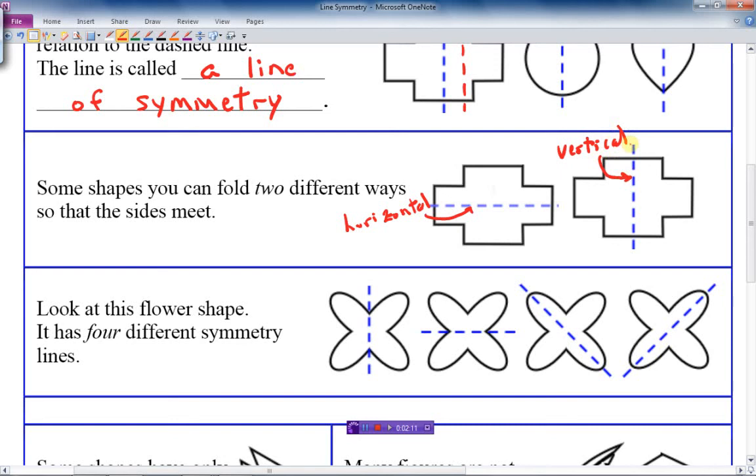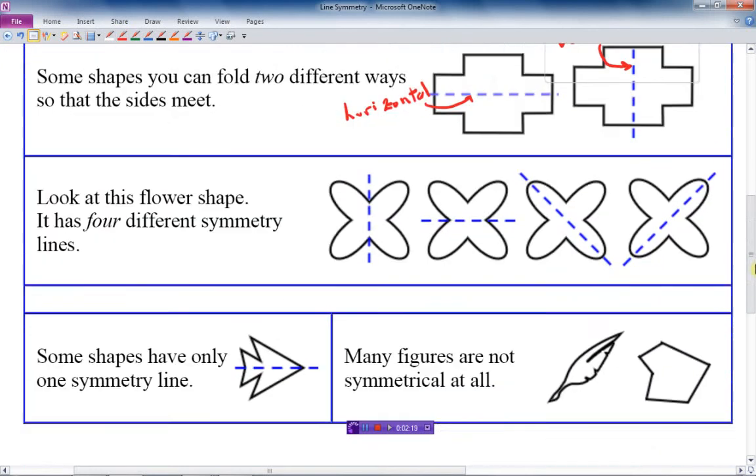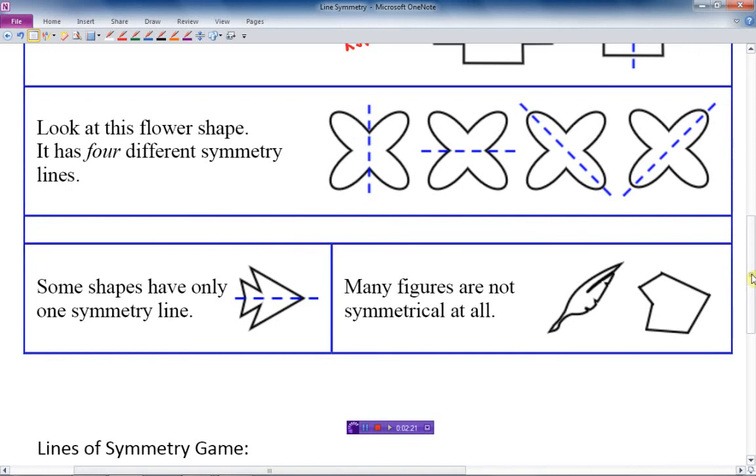Then below that we have a shape, sort of like a flower-type shape, and it has four different symmetry lines. We have the vertical straight up and down there, we have the horizontal line of symmetry...